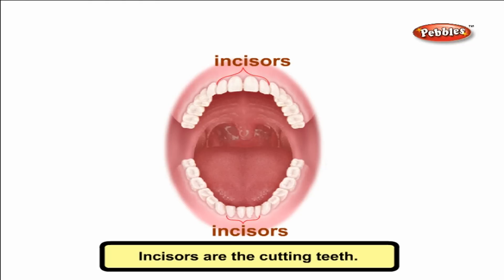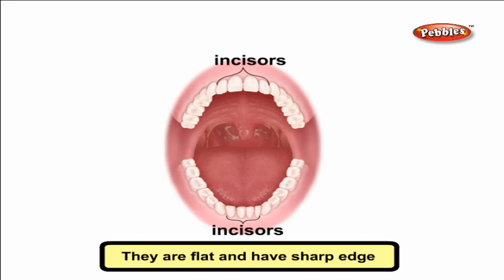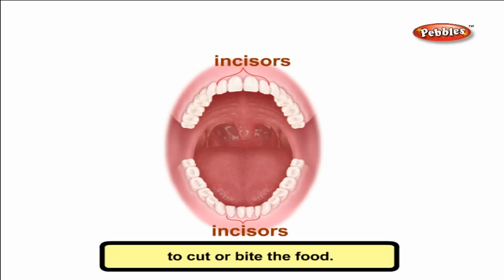Incisors are the cutting teeth. The front four teeth in the upper and lower jaw in our mouth are the incisors. They are flat and have sharp edges to cut or bite the food.